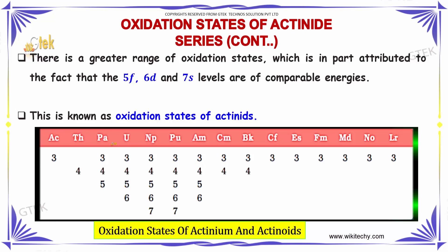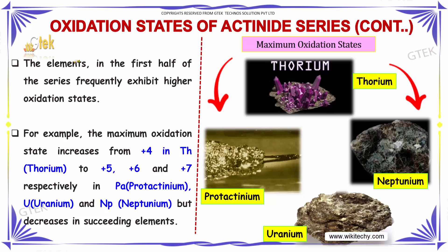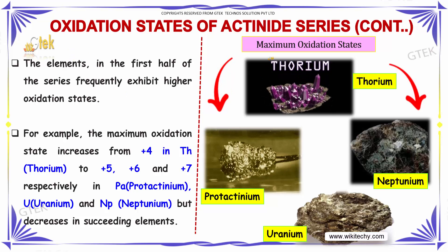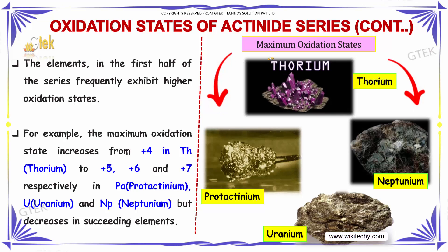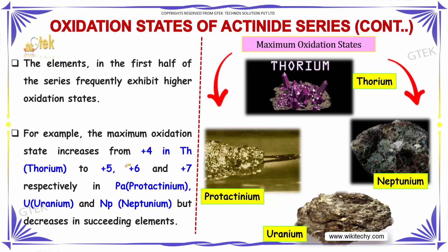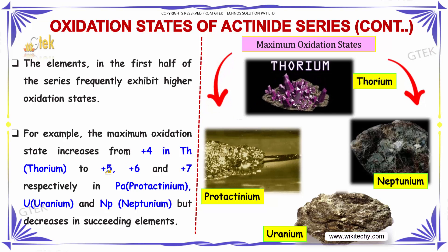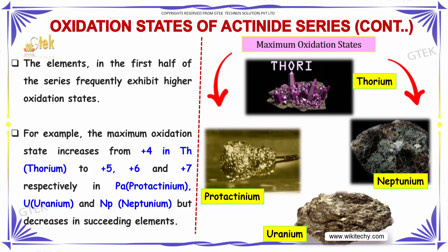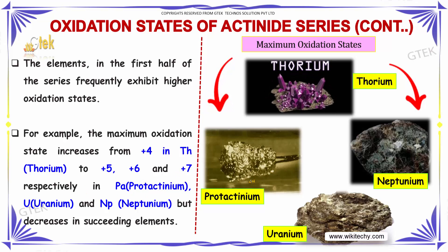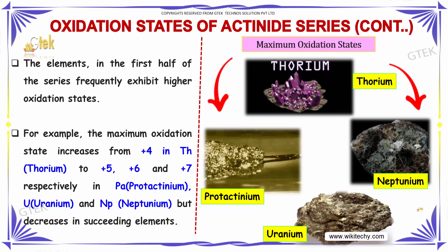The oxidation states of actinium and other actinoids show that elements in the first half of the series frequently exhibit higher oxidation states. For example, the maximum oxidation state increases from plus 4 in thorium to plus 5, plus 6, and plus 7 respectively in protactinium, uranium, and neptunium, but decreases in the succeeding elements.